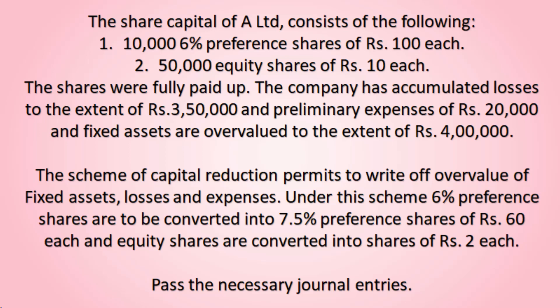The shares were fully paid up. The company has accumulated losses to the extent of rupees 3,50,000, preliminary expenses of rupees 20,000, and fixed assets are overvalued to the extent of rupees 4,00,000. The scheme of capital reduction permits to write off overvaluation of fixed assets, losses and expenses. Under this scheme, 6% preference shares are to be converted into 7.5% preference shares of rupees 60 each.